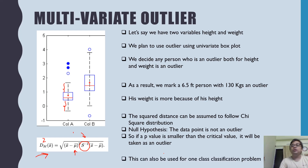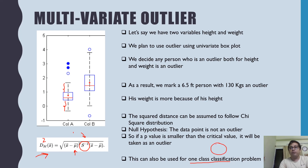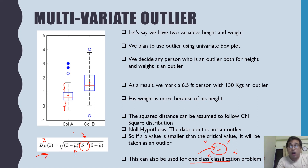Mahalanobis distance can also be used for one-class classification. A classic example is fraud detection: you know what normal transactions look like — they come from a certain distribution — but fraudulent transactions don't have a clear pattern; they could appear anywhere. That's why it's not treated as a binary classification problem. If you try to determine whether a new point belongs to the normal distribution and the p-value is small, you conclude it doesn't belong to the normal class and may belong to the fraud class.